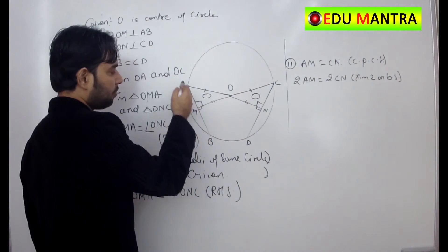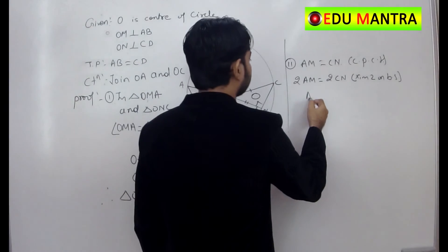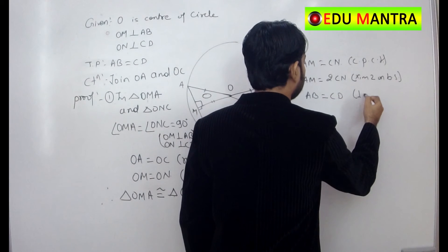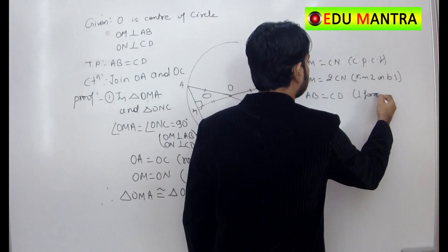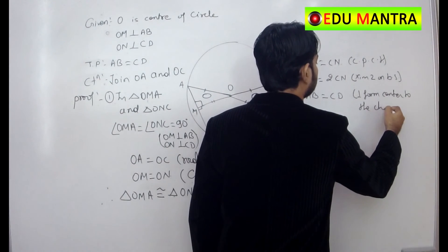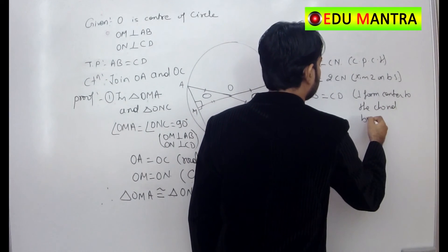So two times of AM is AB, and two times of CN will be CD. Perpendicular from center to the chord bisects the chord.